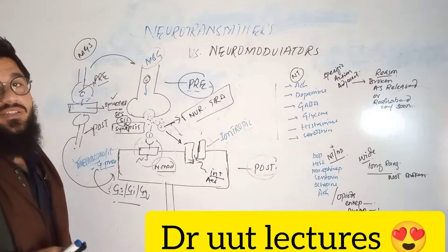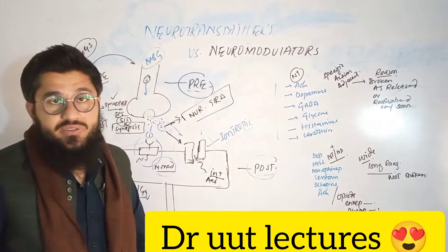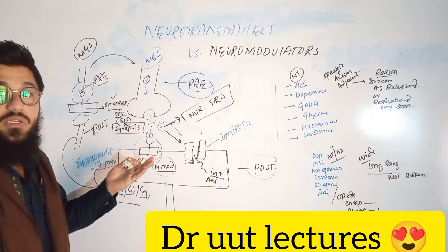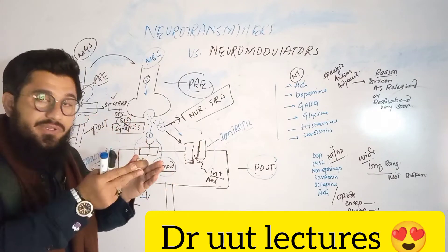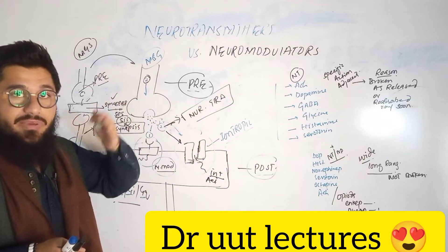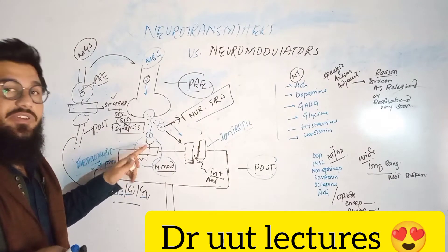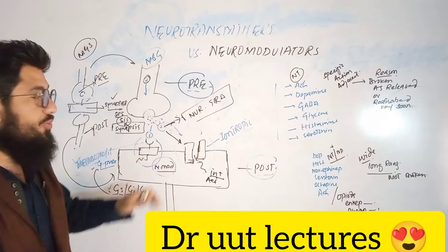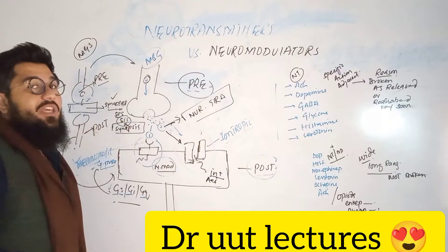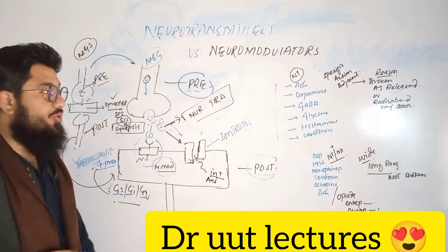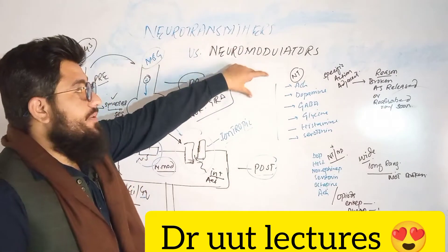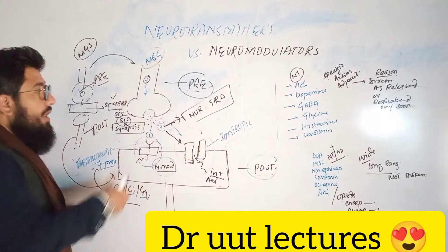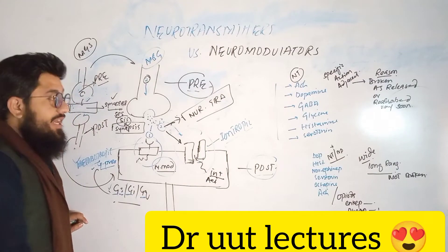The difference between neurotransmitters and neuromodulators is simply about which receptor the chemical interacts with. If the receptor is metabotropic, that chemical is a neuromodulator. If the chemical interacts with ionotropic receptors, it is a neurotransmitter. Examples of neurotransmitters include acetylcholine, dopamine, GABA, glycine, histamine, and serotonin — because they bind with ionotropic receptors and show their actions.